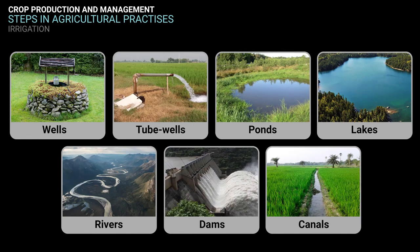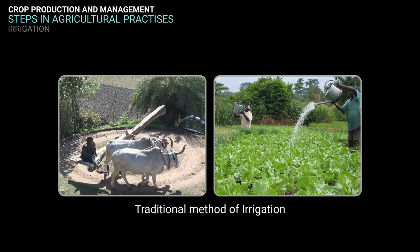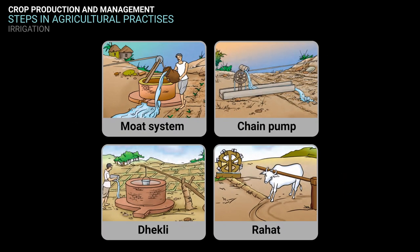Sources of irrigation include wells, tube wells, ponds, lakes, rivers, dams, and canals. Traditional methods of irrigation primarily involve cattle or human labor, making them cheaper but less efficient. These methods include moat, chain pump, dekli, and rahat.